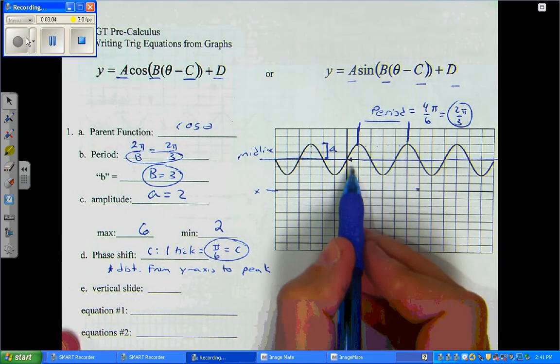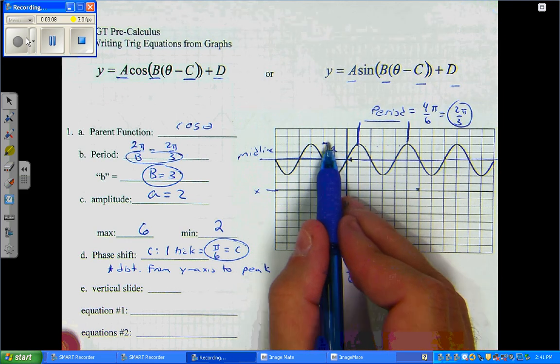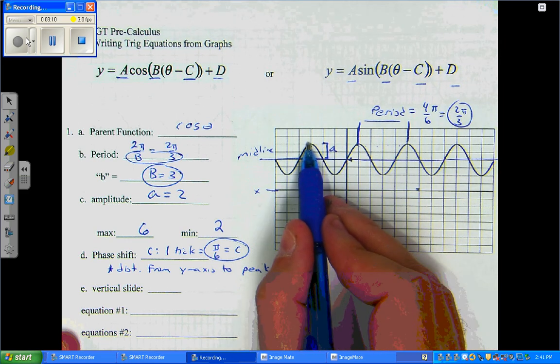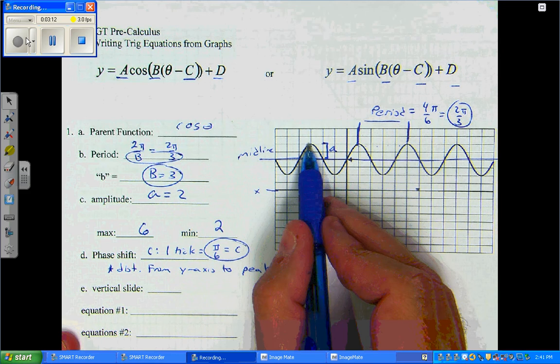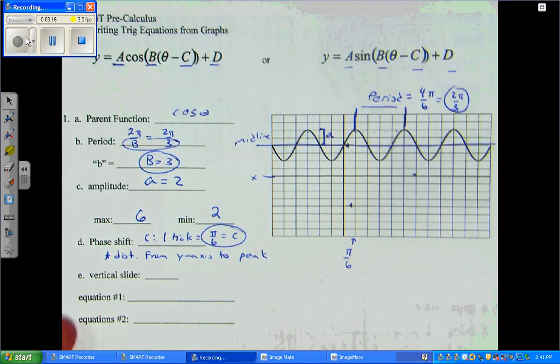Now, you could have used any number of peaks. You could have even gone backwards: 1, 2, 3. And, you get negative pi over 2 for your C value. But, keep it simple. Go positive.